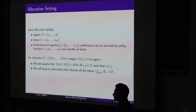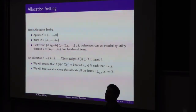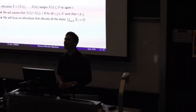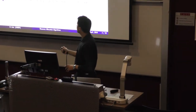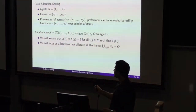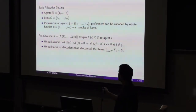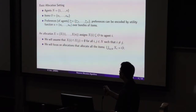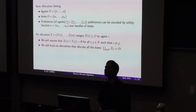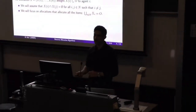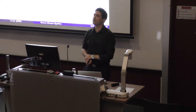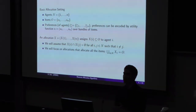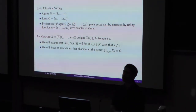Another component is a preference profile, which specifies for each agent I her preference over each subset of items. This denotes the preferences of agent 1 through agent N over different subsets of items. One particular nice way of representing preferences is via utility.